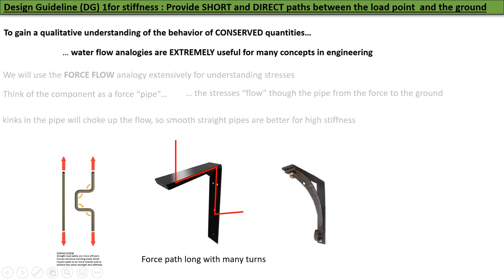If I now attach a smooth curving bracket to it, there's a much smoother flow and it will provide a shorter path. The best one is this kind of bracket. It has a very short path and therefore it will be the stiffest.